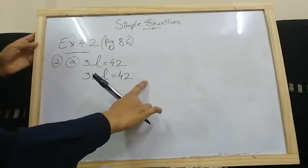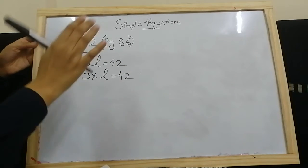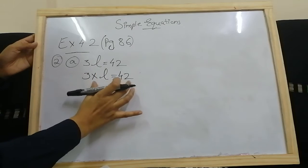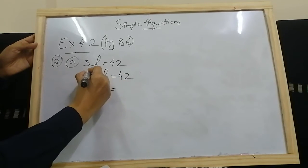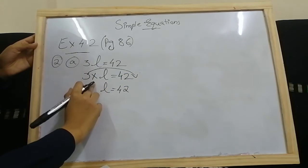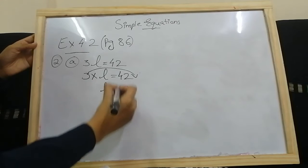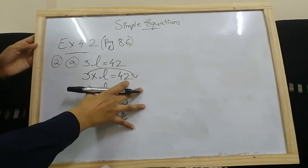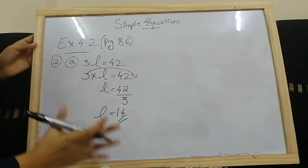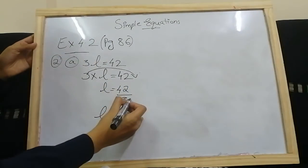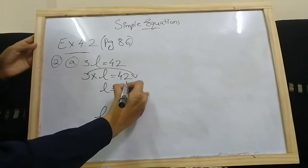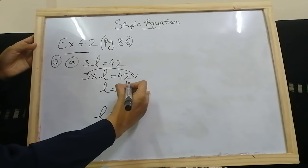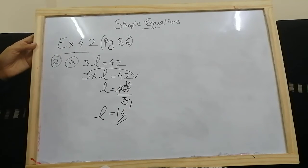So for 3l equals 42 — 3l means 3 into l. Taking 3 to the right-hand side, multiplication becomes division: l equals 42 divided by 3. 42 divided by 3: 3 ones are 3, so for 4 we need one more, giving 12; 3 fours are 12. So 42 divided by 3 equals 14. l equals 14.